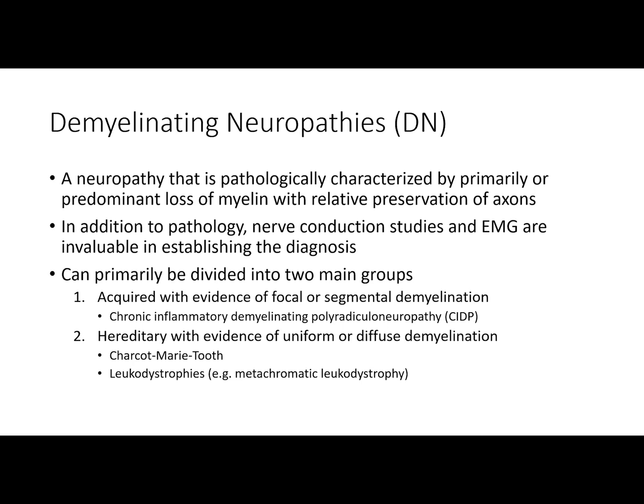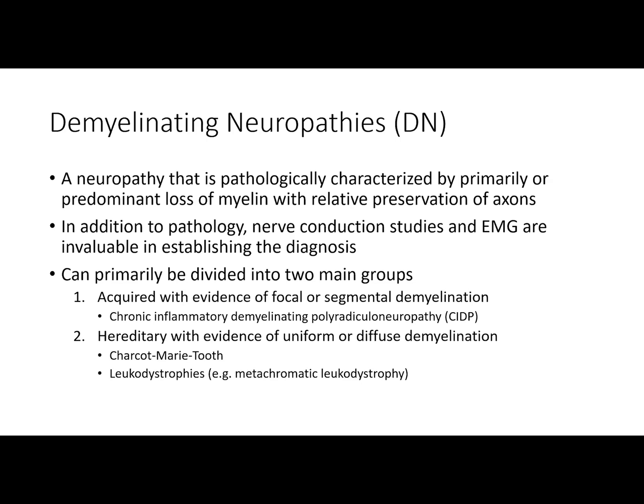The second would be hereditary demyelinating neuropathies with evidence of uniform or diffuse demyelination. Diseases like Charcot-Marie-Tooth or leukodystrophies would fit here. We'll talk about the electrodiagnostic features that can be seen in both hereditary and acquired demyelinating neuropathies.